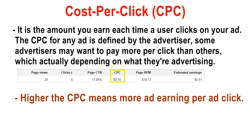This depends on what they are advertising. For example, if somebody is selling a pen drive, the CPC may be less, and if somebody is selling an Apple laptop, the CPC may be higher because the product price is also different. Higher the CPC means more ad earning per click.